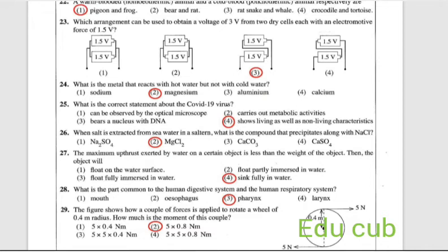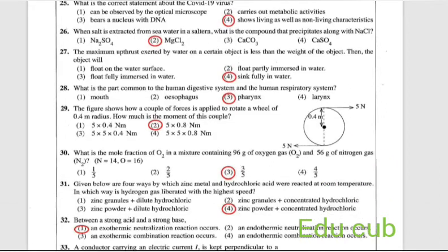Question 27: the maximum upthrust exerted by water on a certain object is less than the weight of the object. Then the object will float on the water surface, float partially immersed in water, float fully immersed in water, or sink fully in water. The answer is sink fully in water.